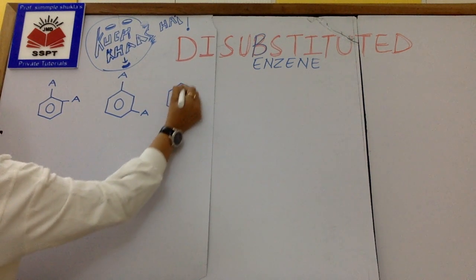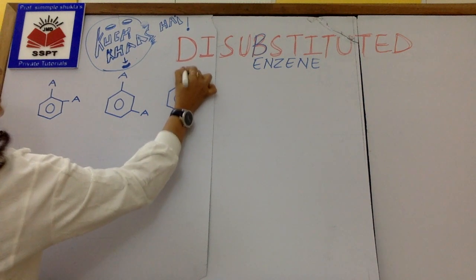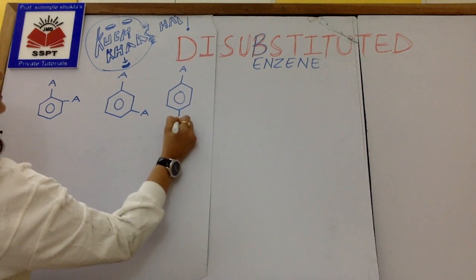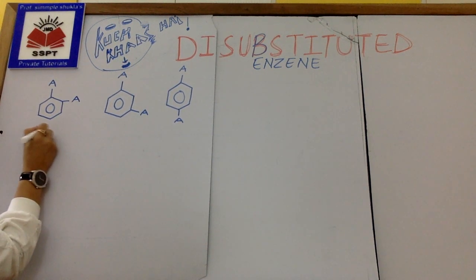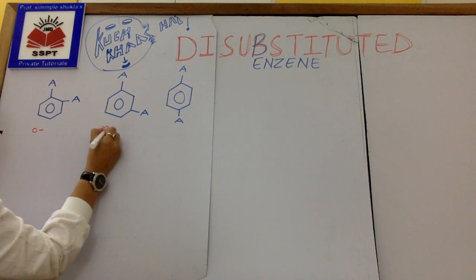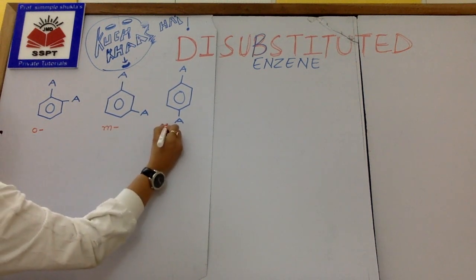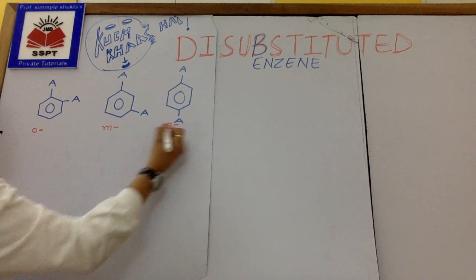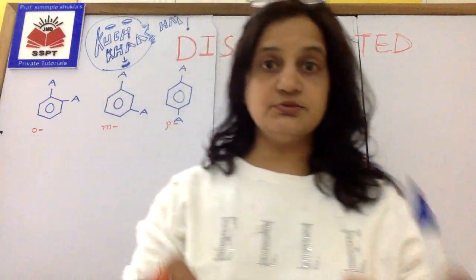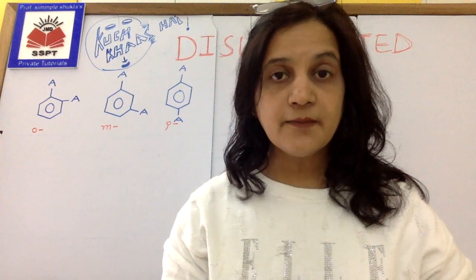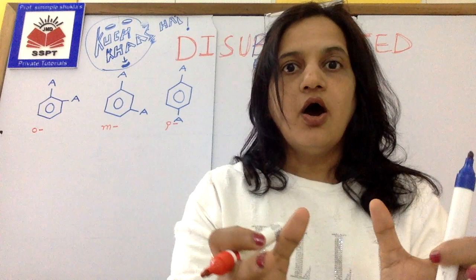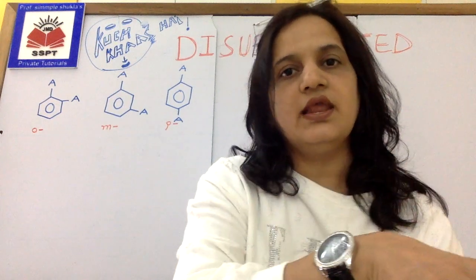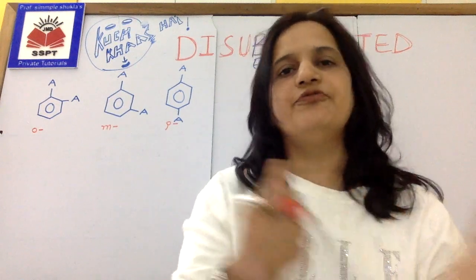So, a disubstituted benzene can be written in three ways. This is the ortho isomer, this is the meta isomer, and this is the para isomer. I think there is no need to explain what ortho, meta, para are — you should have that preparation already. If not, read that first and then listen to this lecture.